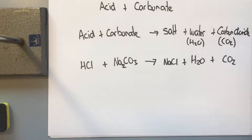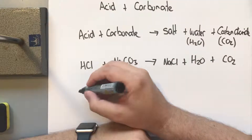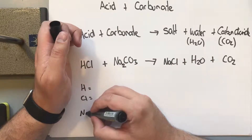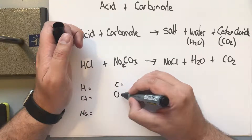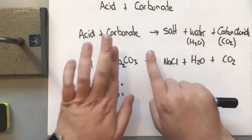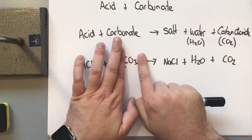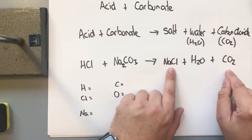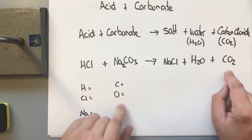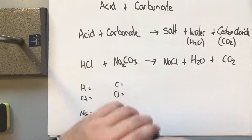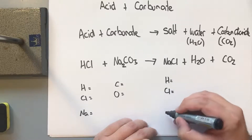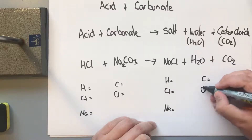Now we need to work out whether this is actually a balanced equation. This one is a little more complex, so we're going to write out each individual atom to keep track. Because we don't have carbonate on the product side — it gets broken down into carbon dioxide — we need to separate and look at each carbon and oxygen atom individually. So we track: H, Cl, Na, C, and O on each side.